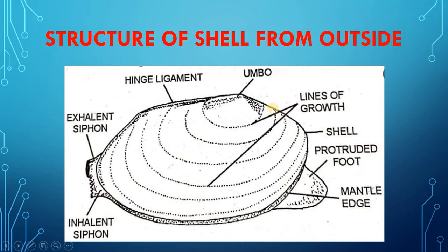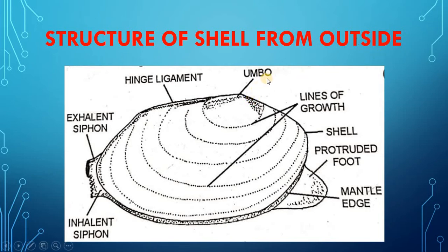At the extreme anterior dorsal side is a knob-like structure with a whitish swelling termed as the umbo. This is the place from where the outermost brown or grey horny covering of the shell has been dissolved away by the action of carbonic acid in water, and the white calcareous prismatic layer is exposed. The umbo represents the first form of the larva.